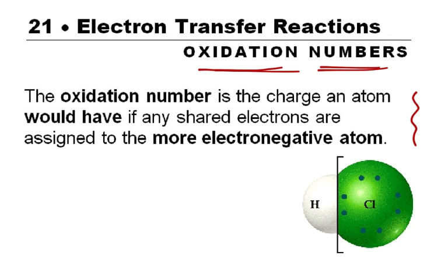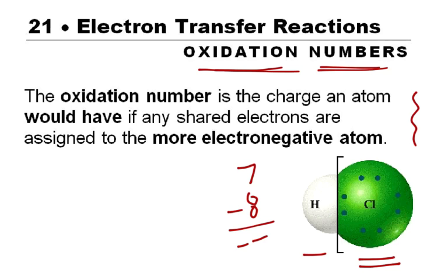Here's our example of HCl. Chlorine is more electronegative than hydrogen, so the electrons are going to be given to chlorine. Chlorine normally has 7 valence electrons; in this case it has 8, so that gives it a charge of negative 1 — negative 1 is its oxidation number. Hydrogen usually has 1 electron; in this case it has 0, so that gives it an oxidation number of plus 1.